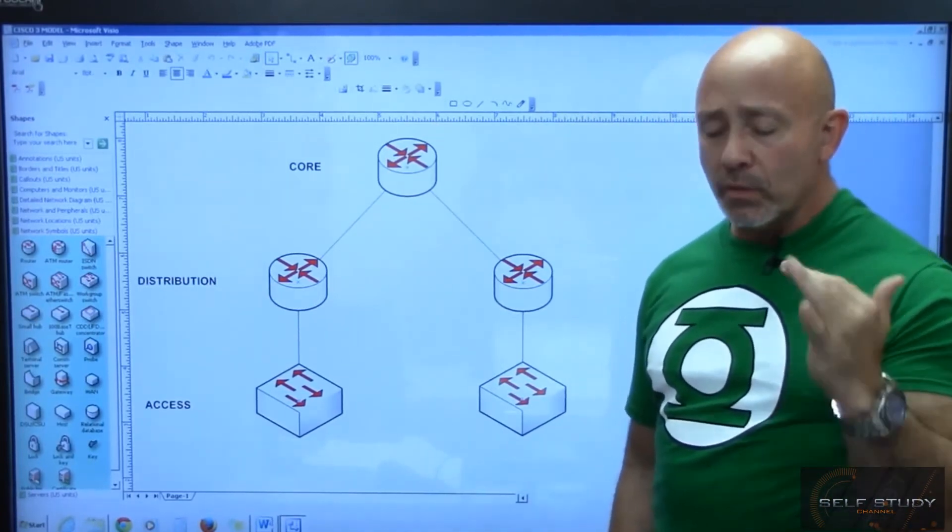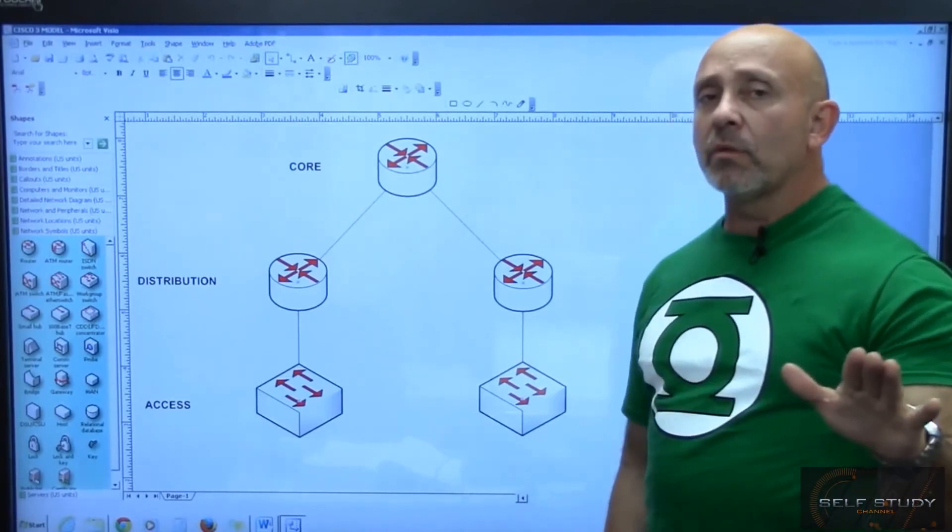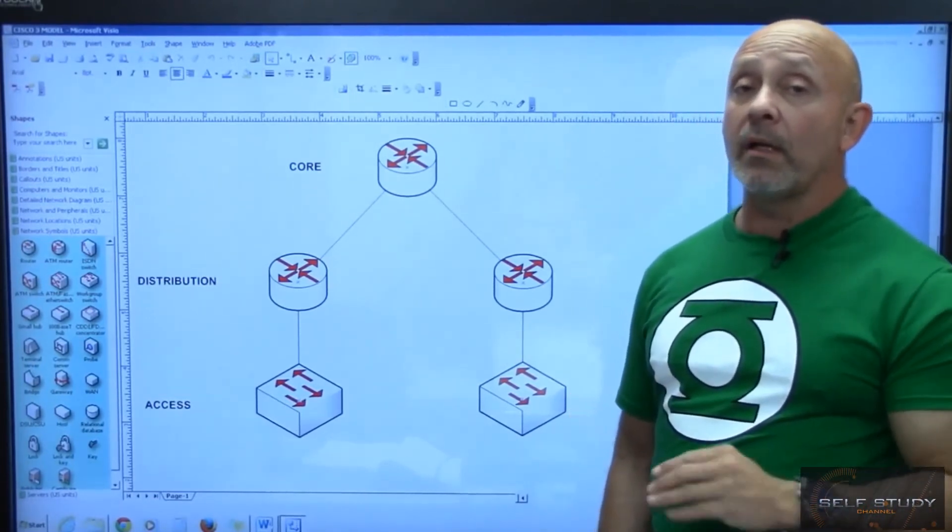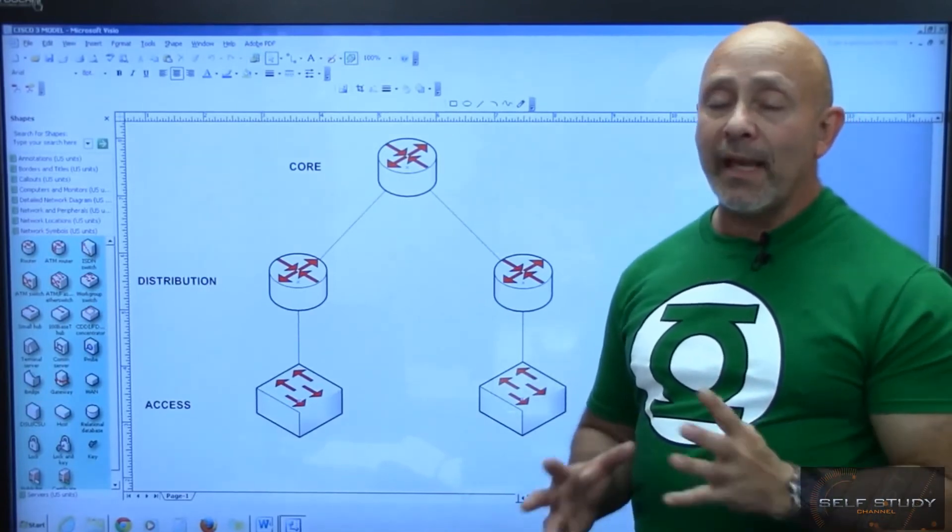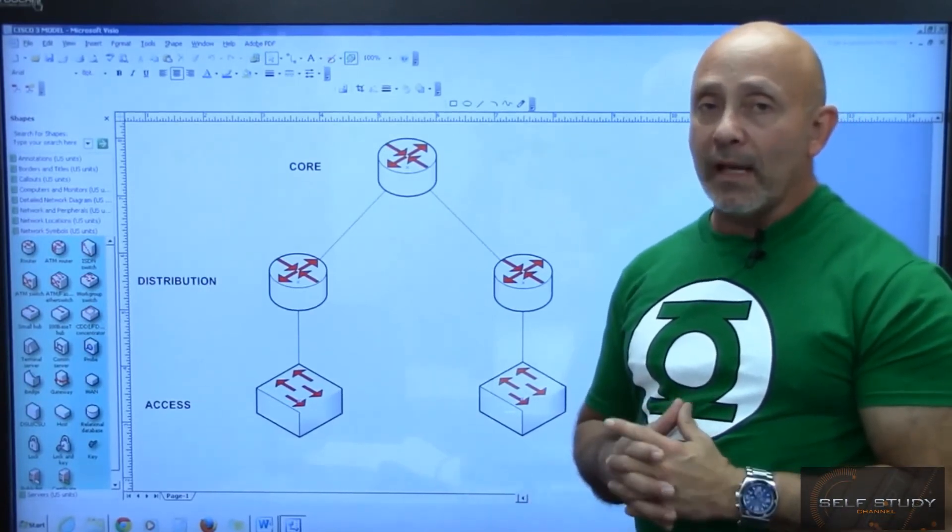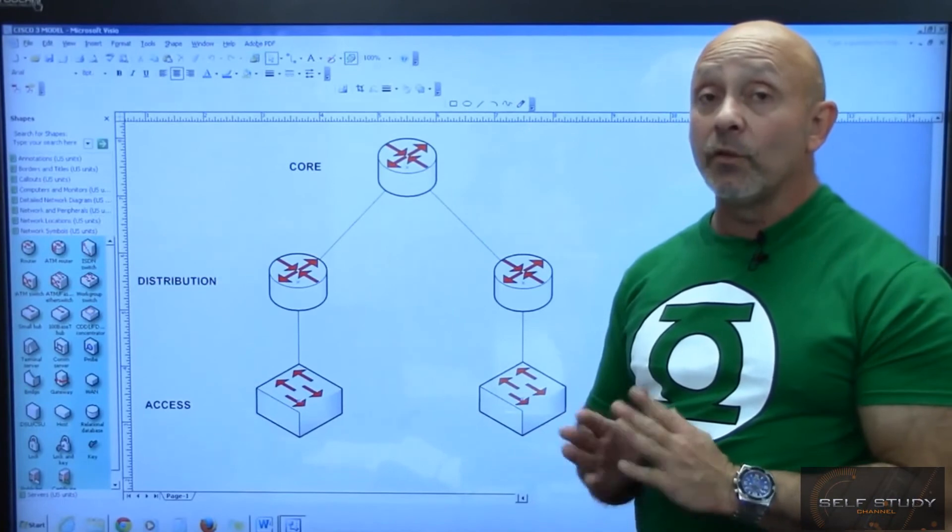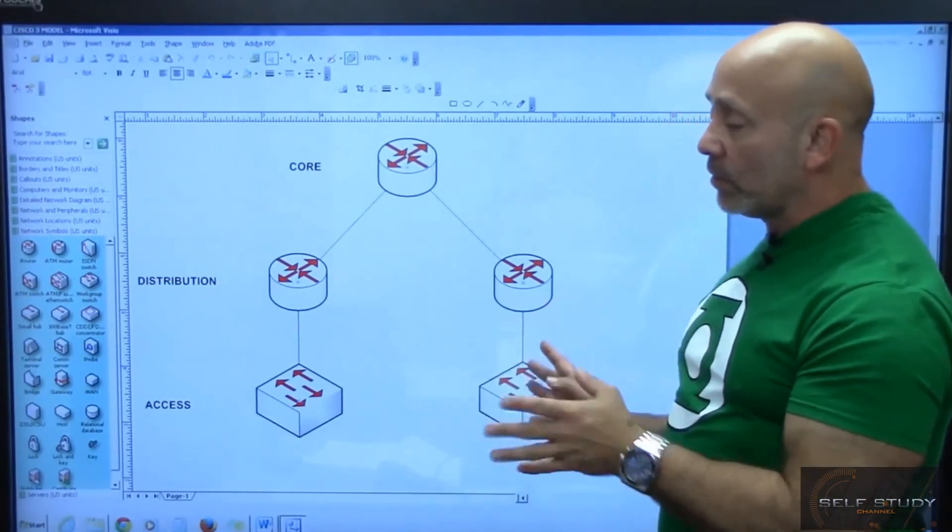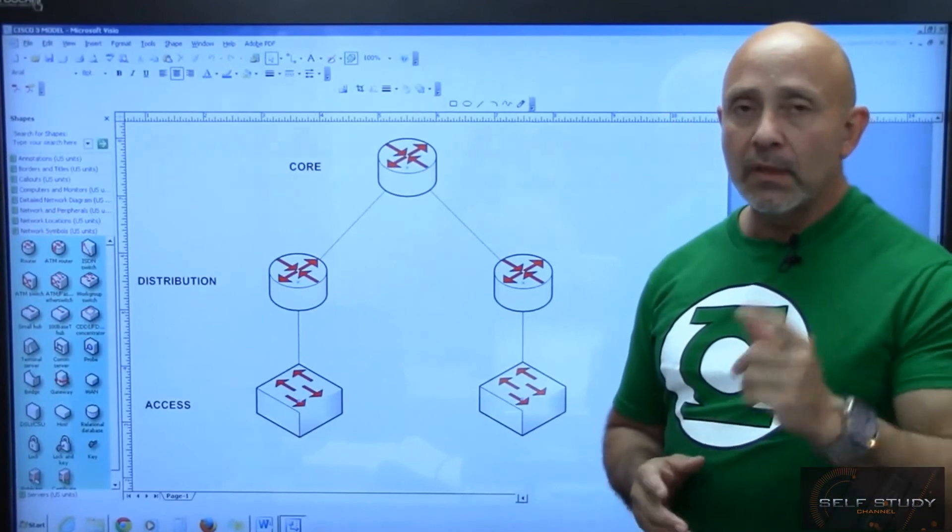So again, it's your distribution layer, the one that's really doing all the routing, all the access lists, everything that is required to actually route the packets in the direction that they should be going. That's your distribution layer. See you in the next one.